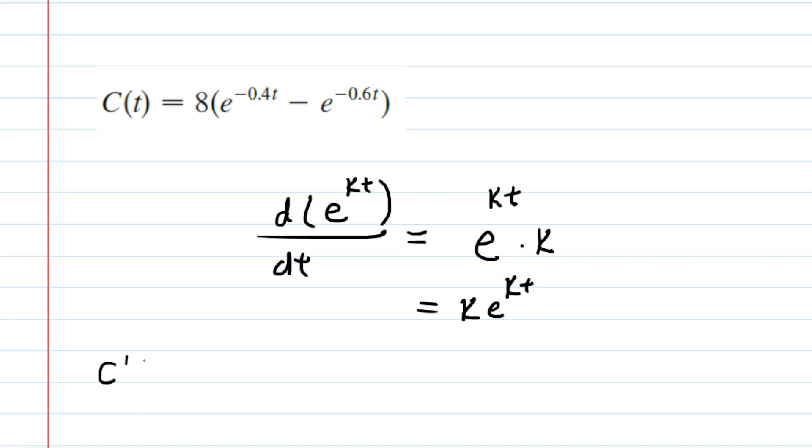Here we go. C prime of t: we have 8 as a constant multiple, so the constant multiple rule tells you to keep that constant and multiply by the derivative of the inside. For this first term, our k is negative 0.4, so we have 8 times negative 0.4 e to the negative 0.4t, minus—and our k in the next part is negative 0.6. Be careful, you're subtracting a negative 0.6, so that becomes plus 0.6 e to the negative 0.6t.